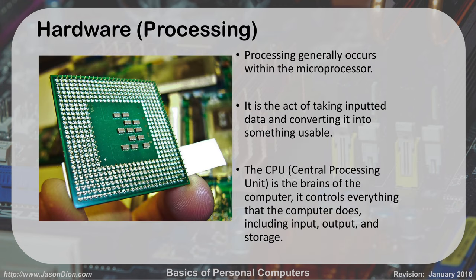Hardware also does processing, and we need a central processing unit to do that. Our processing occurs within these CPUs, these microprocessors. It's the act of taking inputted data and doing something with it to make it usable. For instance, if I take ones and zeros inputted from a CD, it can come out through the speakers as music. The CPU is the brains of the computer — all data goes through it. If your CPU goes bad, the whole computer stops working.